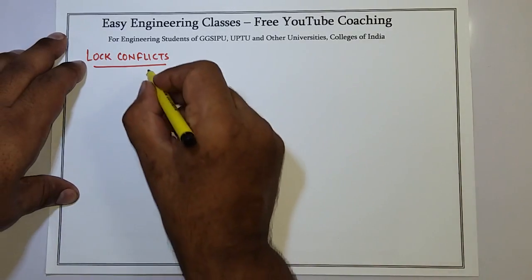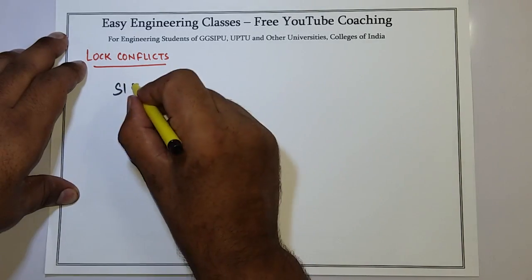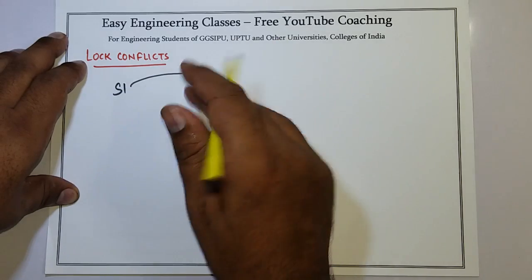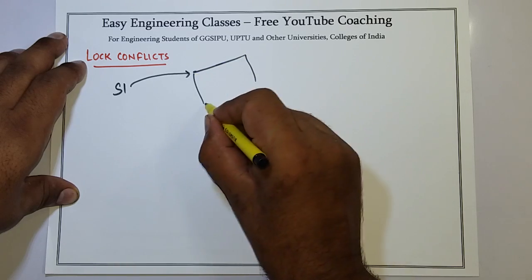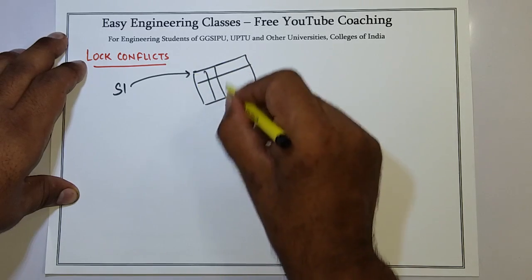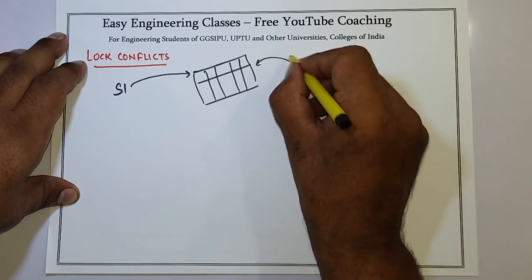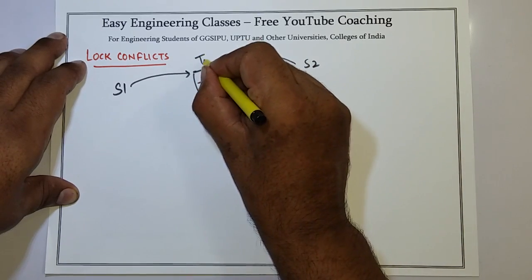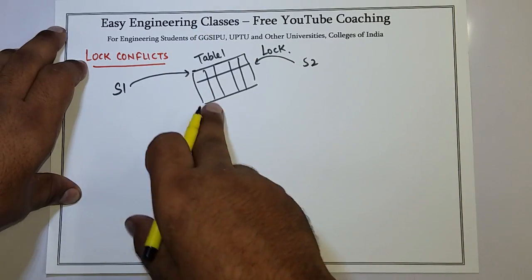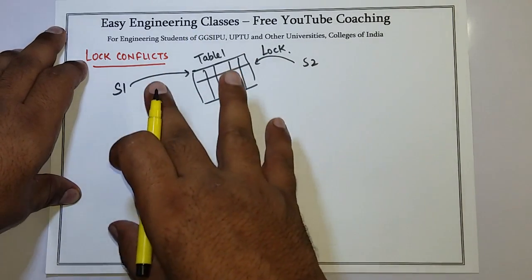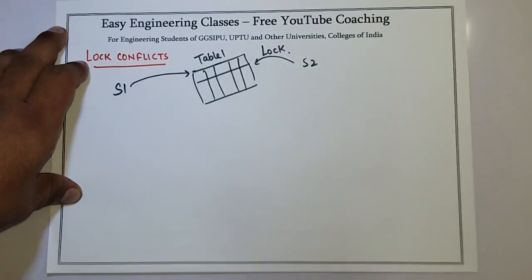lock conflict occurs when a session, suppose the session is S1, it attempts to access a row or table but that row or table is locked by another session S2. So if S2 has a lock on this table 1 and S1 tries to access the same table, then there will be an error of lock, or we can say that lock conflict has occurred.